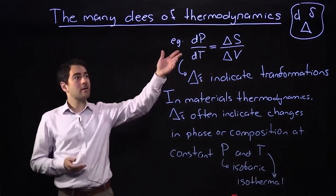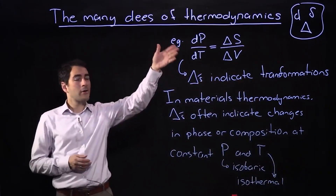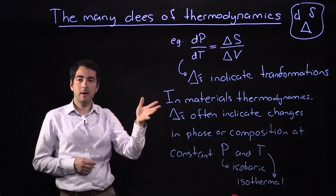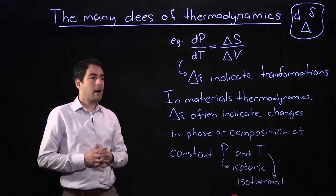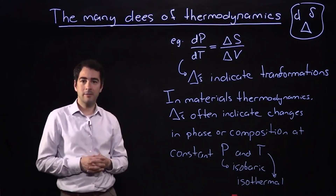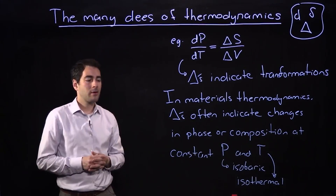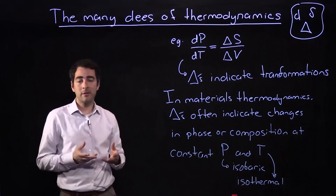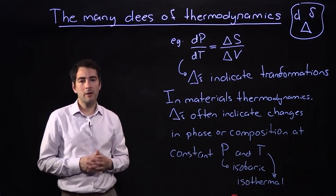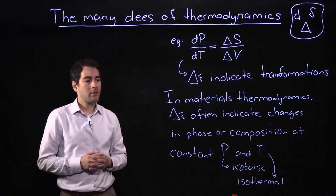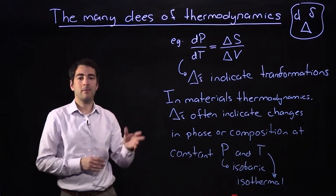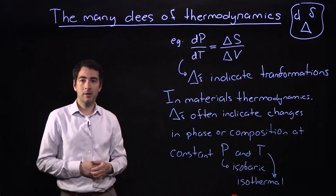Of the three d's — lowercase d, lowercase Greek d, and uppercase Greek delta — this uppercase Greek delta is the one that contains the most physical unstated assumptions. It contains the most information about the system, but as a result it is often the hardest for students to understand when they first encounter it. So we're going to take some time to draw out what is meant by transformations and transformation quantities.